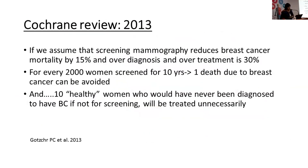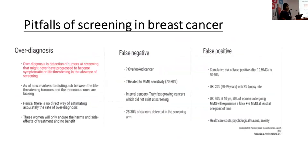A Cochrane review in 2013 concluded that for every 2,000 women screened for 10 years with a mammogram, one breast cancer-related death could be avoided, but 10 healthy asymptomatic people who would never have known they had breast cancer would be treated with surgery or radiation.